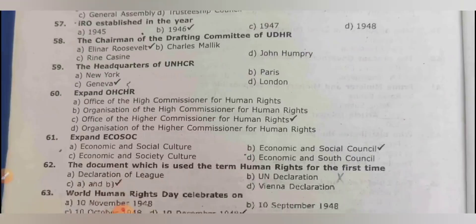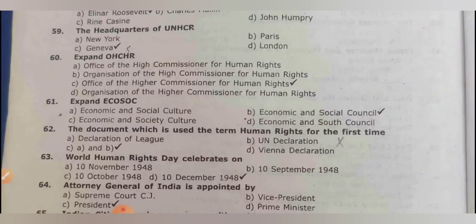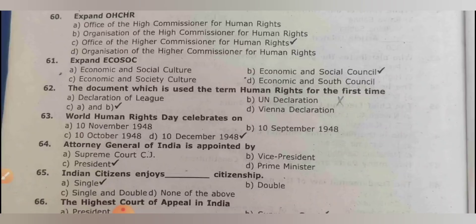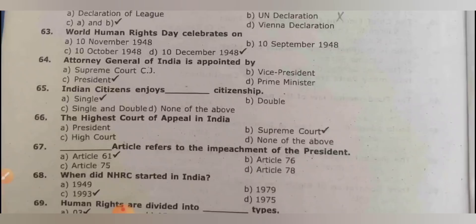IRO was established in the year 1946. The chairman of the drafting committee of UDHR is Eleanor Roosevelt. The headquarter of UNHCR is Geneva. OHCHR stands for Office of the High Commissioner of Human Rights. ECOSOC stands for Economic and Social Council. The document which led to the term 'human rights' for the first time is both the Declaration of Lee and the UN declaration.